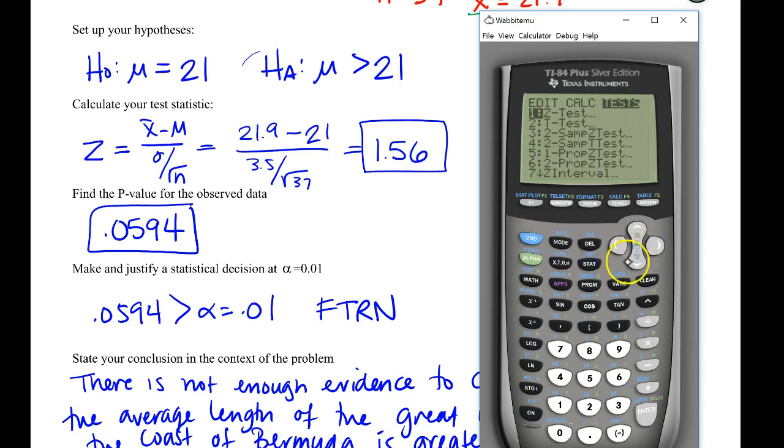One last thing, if you wanted to you could do this on your calculator. This is a z test. Make sure it's on stats, then you just put in what's the null value, what was the original sigma which was 3.5, the x-bar evidence was 21.9, and we had 37 sharks. We wanted to show that they were longer so it's a greater than alternative. You get out the same z. The p-value is slightly different because of the rounding issues but otherwise we're perfect.